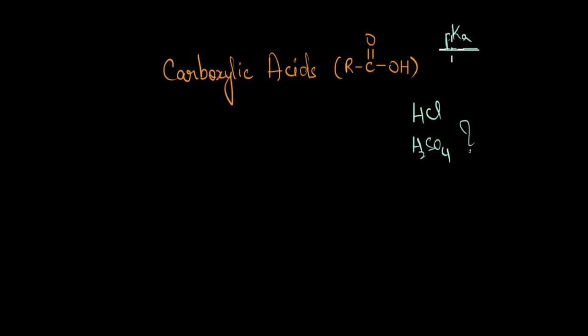pKa values give us an indication of the relative acidities or the acidic strength of different acids, and pKa value is nothing but the negative logarithm of Ka value, which is our acid dissociation constant.